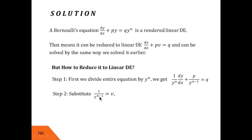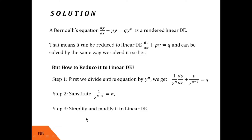In Step 2, we use the substitution v = 1/y^(n−1). This substitution comes from the second term of the Step 1 equation, which contains 1/y^(n−1) multiplied by P. Comparing with dv/dx + Pv = Q, we see that v = 1/y^(n−1).